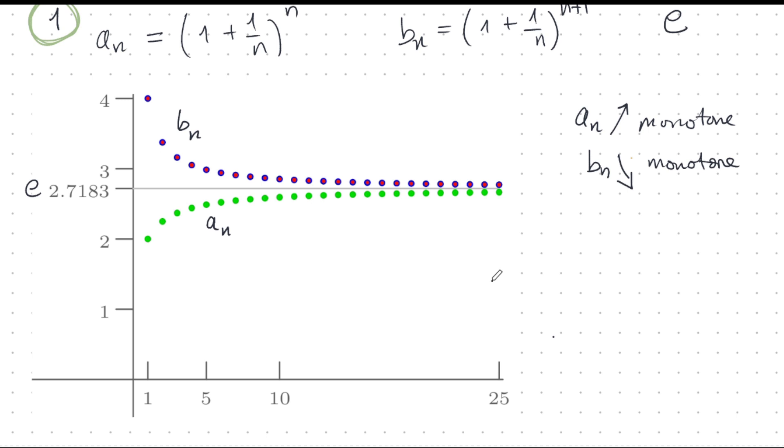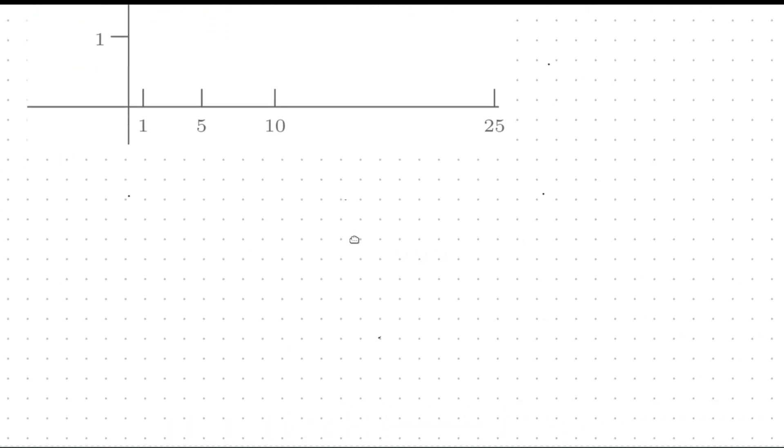These two sequences are really incredible and they both can be used as definitions of the number e. And that's why they're important because e is very, very important. Okay. One thing you can see from here, you can sort of guess that the convergence is not all that fast. So let's just see a few examples of how that convergence goes.